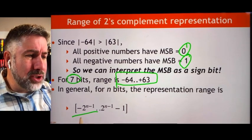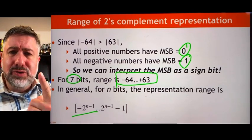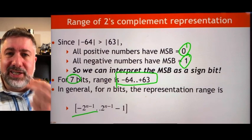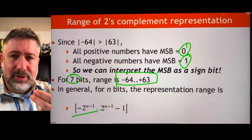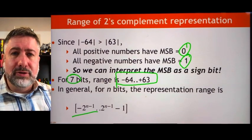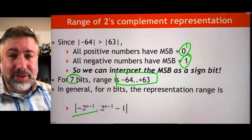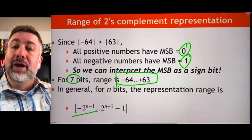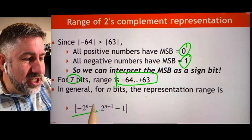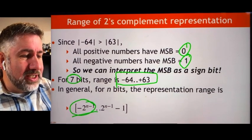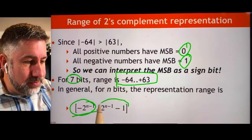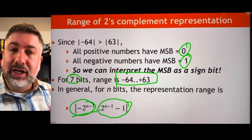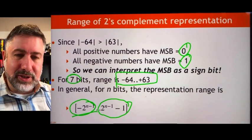In general, we have numbers from negative 2^(n-1) to 2^(n-1) - 1. Why n minus 1? Because the first bit is 2 to the 0. So a 1-bit representation has 2^0, 2 bits has 2^1 and 2^0, and 7 bits has 2^6 down to 2^0. So 2^6 is our biggest negative number, and 2^6 - 1 is our biggest positive number in a 7-bit representation.